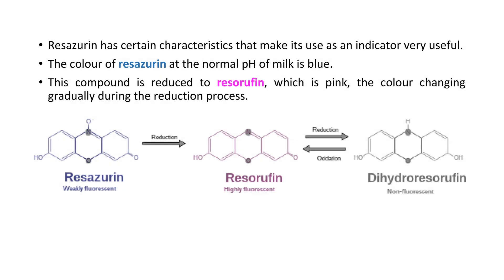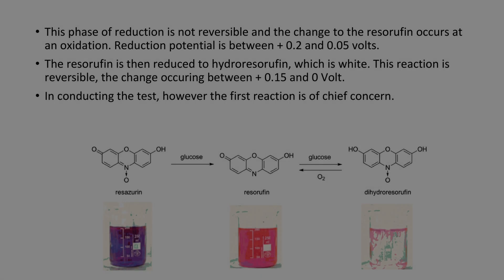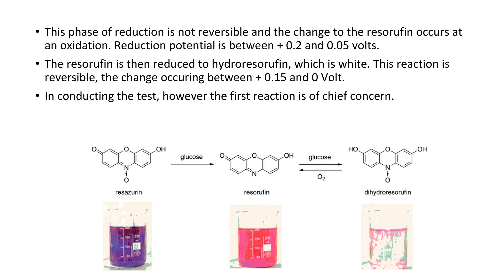Resazurin has certain characteristics that make its use as an indicator very useful. The color of resazurin at the normal pH of milk is blue. This compound is reduced to resorufin, which is pink, and the color changes gradually during the reduction process. This phase of reduction is not reversible, and the change to resorufin occurs at an oxidation-reduction potential between +0.2 and +0.05 volts.